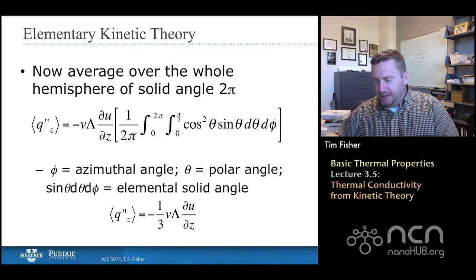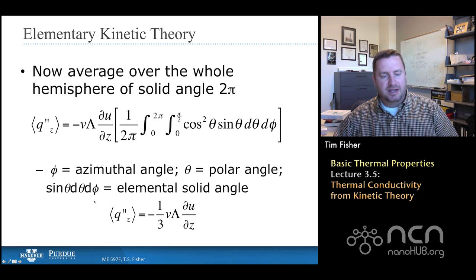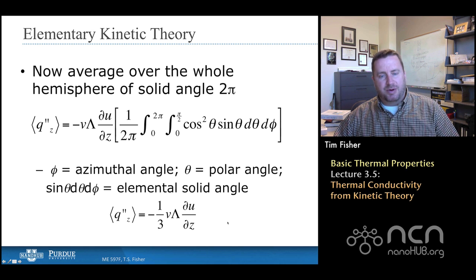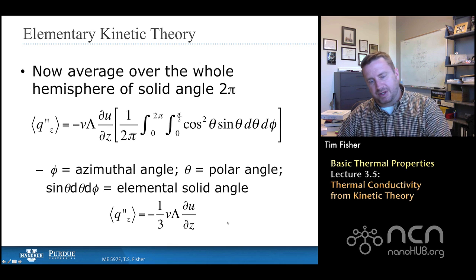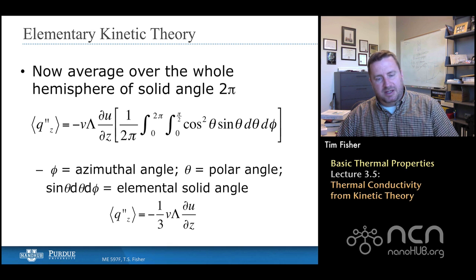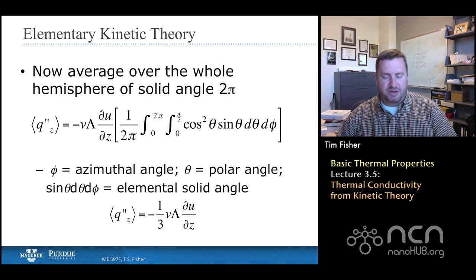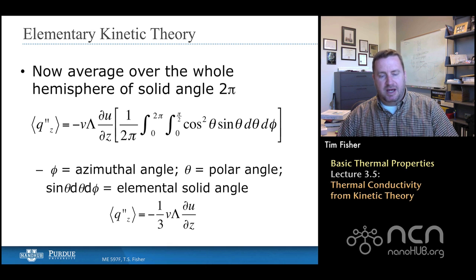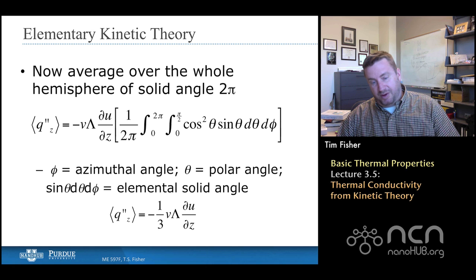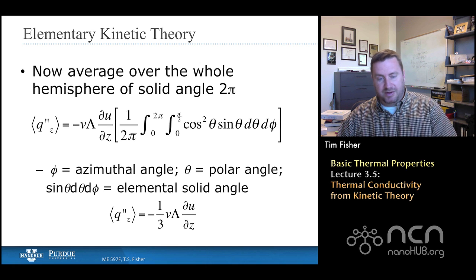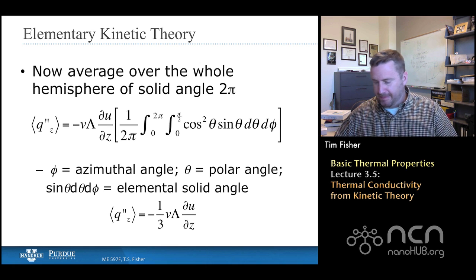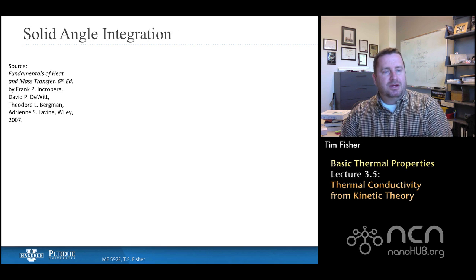Looking at this a little bit more, we find that this average heat flux can be expressed as a product, when I just evaluate the integral that's shown there, as a product of the velocity, the mean free path, and this z gradient of the energy density, and then pre-multiplied by a factor of one-third that comes from an evaluation of those integrals. And the minus sign is there to denote that the heat will flow in the opposite direction of the internal energy gradient.